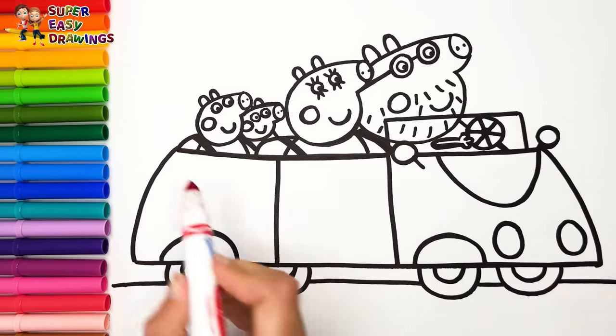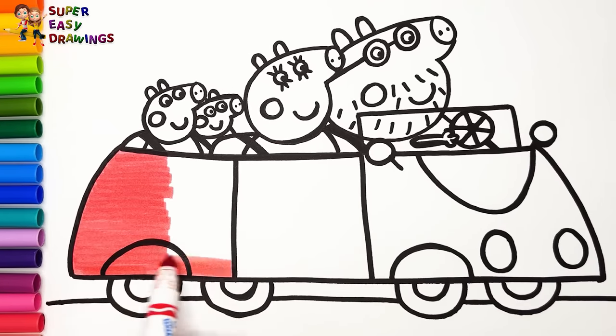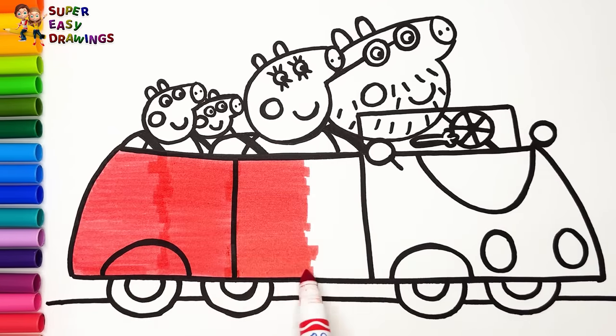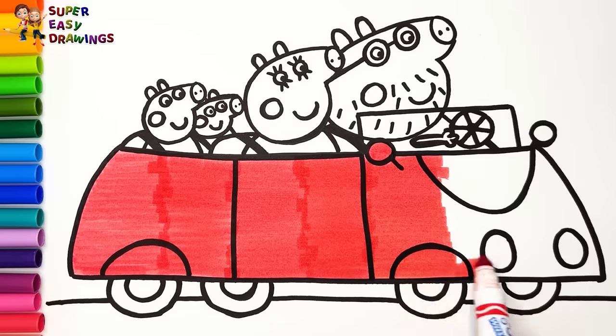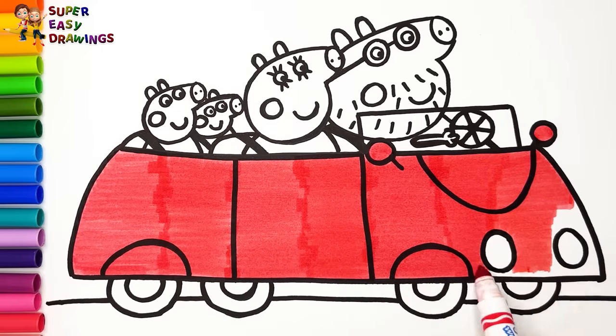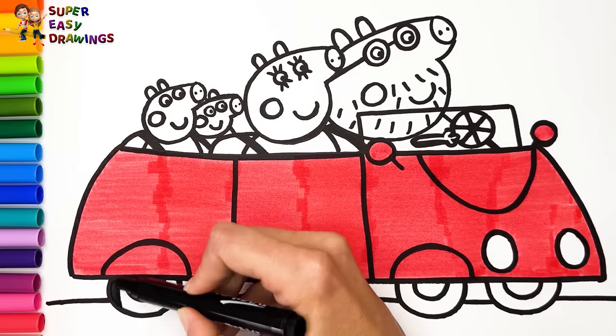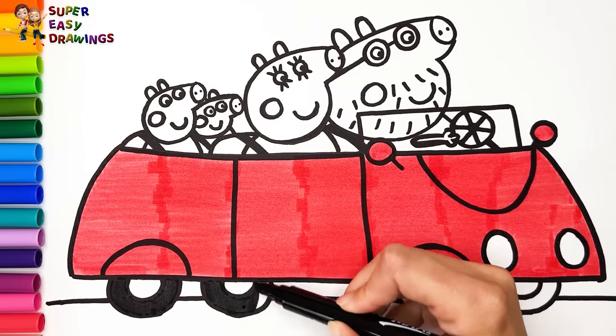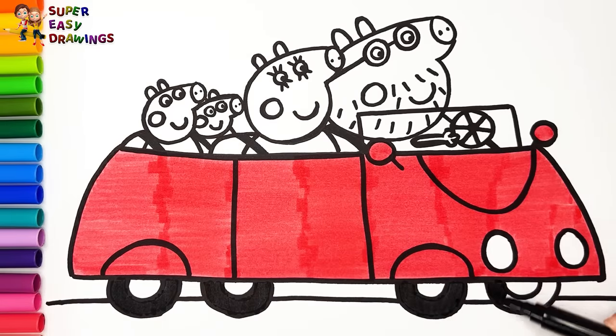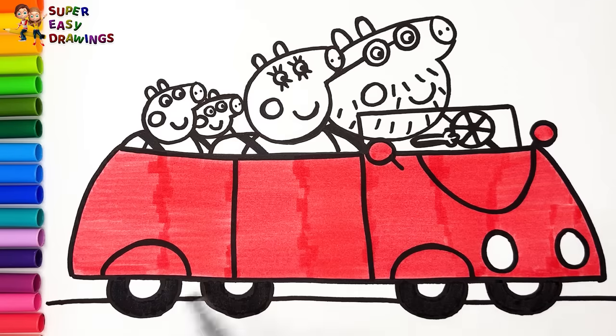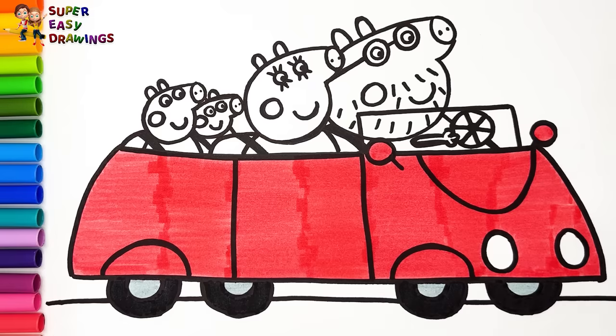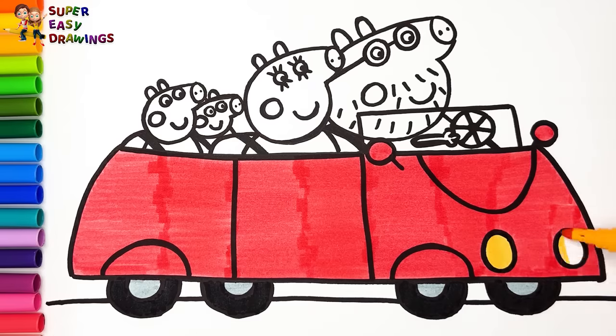Let's start coloring! I colored the car with red. Then I use black for the wheels and gray. I colored the lamps yellow.